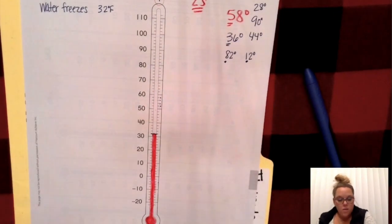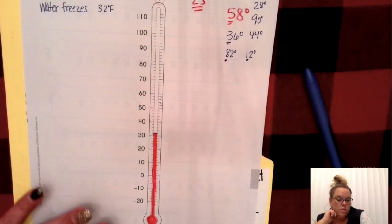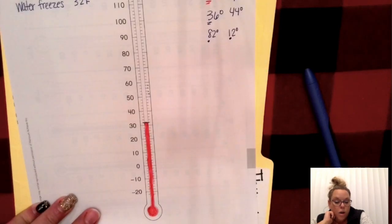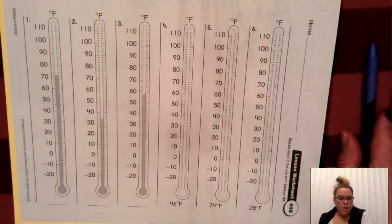And it's really important that I stop where my line was. That is 32 degrees. Now, you're going to have a chance for just a few minutes to read and color some thermometers. So let's turn our paper over.